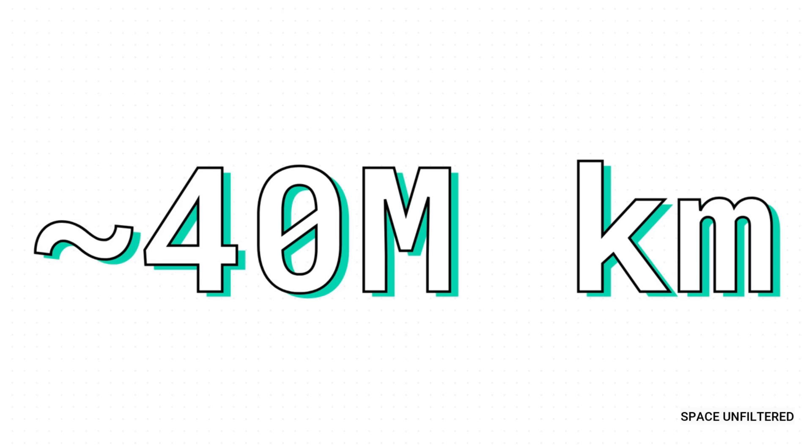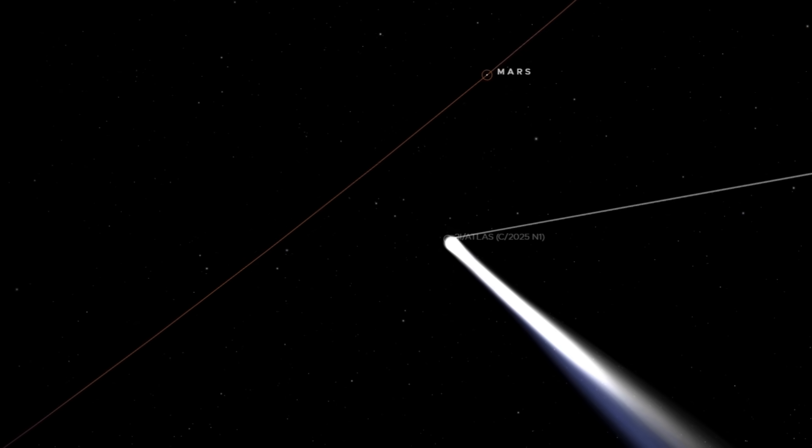And then, there's the issue of distance. I mean, we say the comet made a close approach to Mars. But in space, close is a very relative term. We are talking about an estimated 40 million kilometers away. That is an absolutely enormous distance. Trying to photograph an object that far away with a nav cam, a camera designed to look for rocks in front of the rover, is just incredibly improbable.